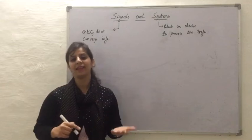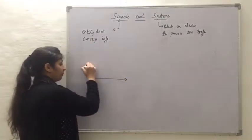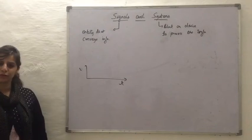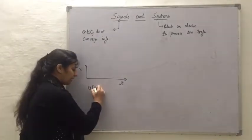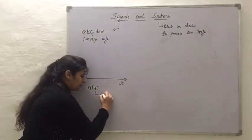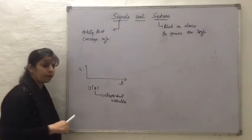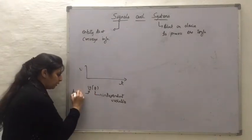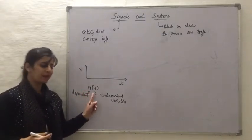Let us consider a system that takes different voltages at different points of time. We can plot a graph between time and the voltage that the system takes at different points of time. So we have voltage V, and this voltage is a function of time T. Time here is an independent variable, while the voltage value V depends upon time, making V a dependent variable.